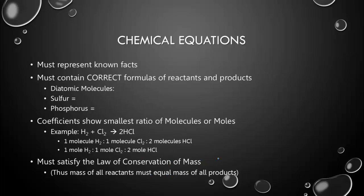What else must chemical equations tell us? Well, they must represent known facts. So when we write them, we can't just willy-nilly put things together. We have to show that this could actually happen. So we represent, or we try to, in the best of our ability, represent a known fact. They must contain, then, correct formulas of the reactants and products.